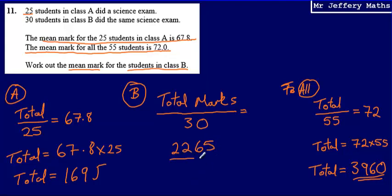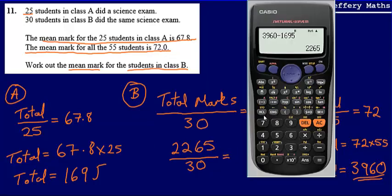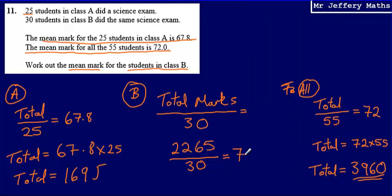So the total marks for class B is 2,265. I divide that by the number of students in class B, which is 30, and this gives me the mean for class B. So 2,265 divided by 30 gives an answer of 75.5. The mean mark for the students in class B was 75.5.